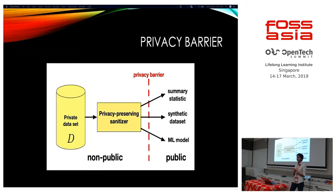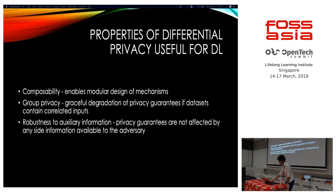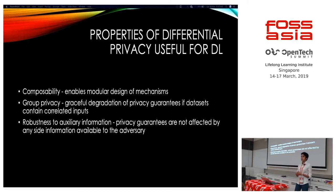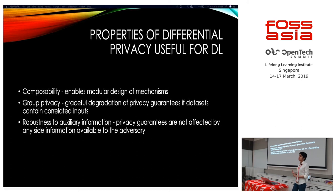Differential privacy acts like a privacy barrier between your private dataset and what you release to the public. Key properties that make differential privacy so useful for deep learning are: composability, which enables modular design; group privacy, which ensures graceful degradation; and robustness to auxiliary information.